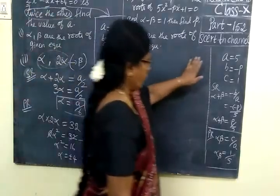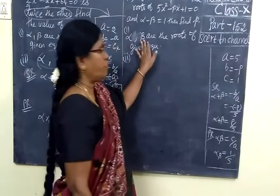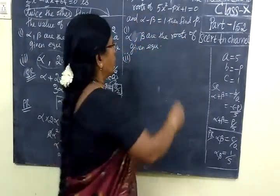Next one. Everything is written. Alpha beta are the roots. In the equation, your roots are given.